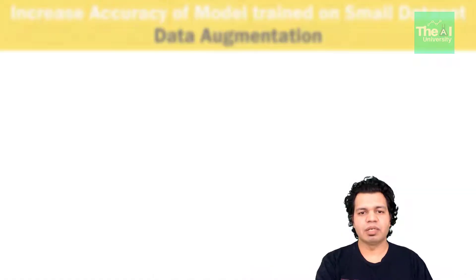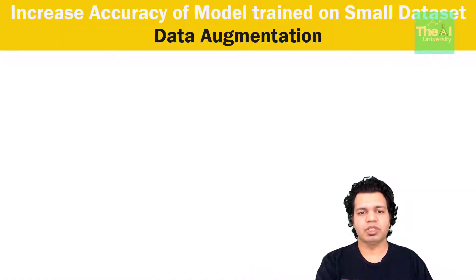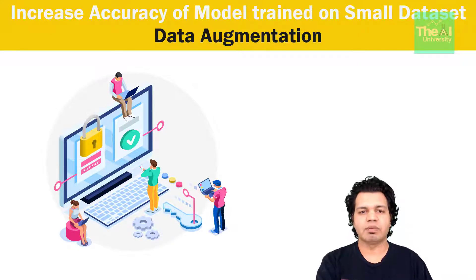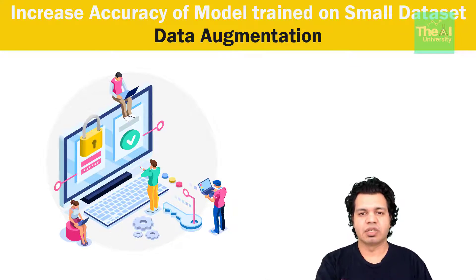If we want to build a more accurate model then we need to have loads and loads of data — be it image data, text data, or even transactional data. The more data we have for training, the better predictions we will get from our deep learning or machine learning model. Also, the chances of model overfitting will increase when we have a smaller dataset, so it is always advisable to use a larger dataset.